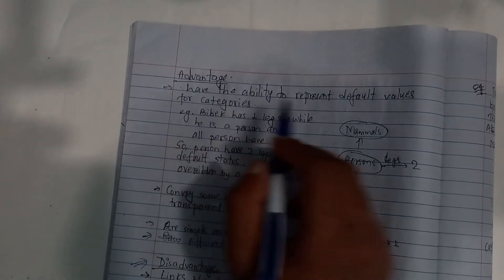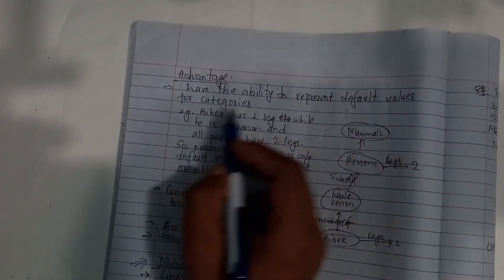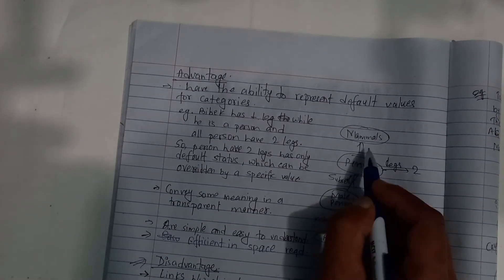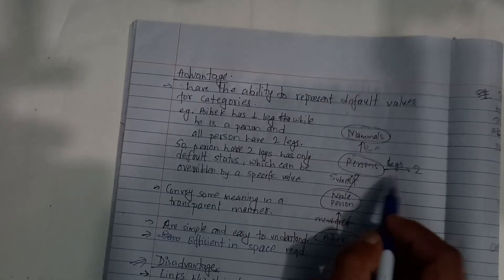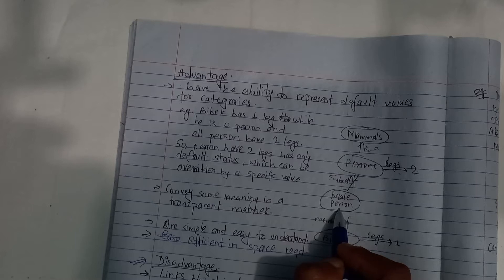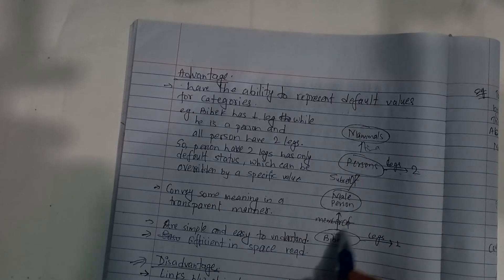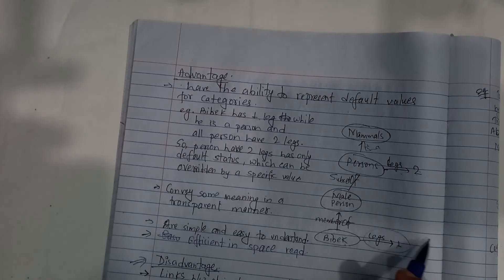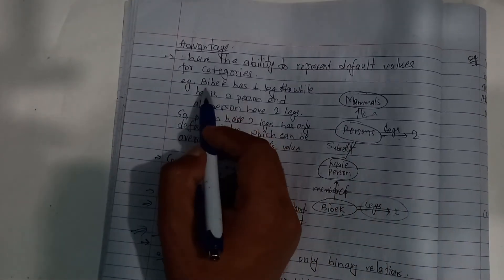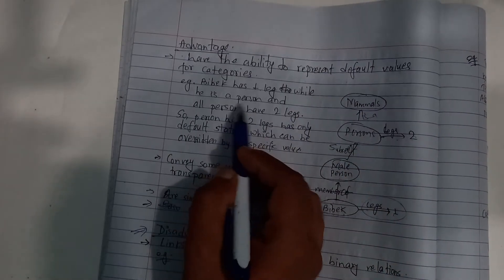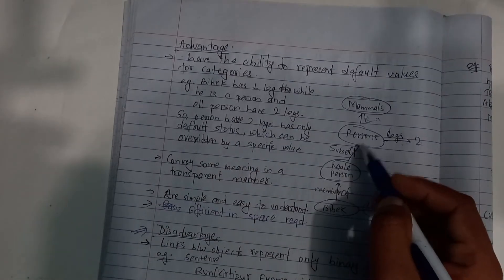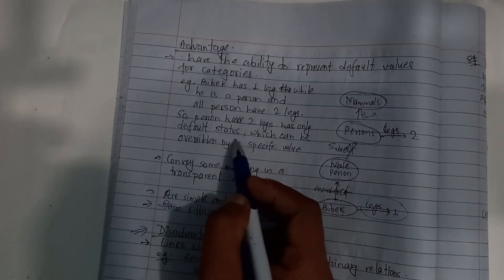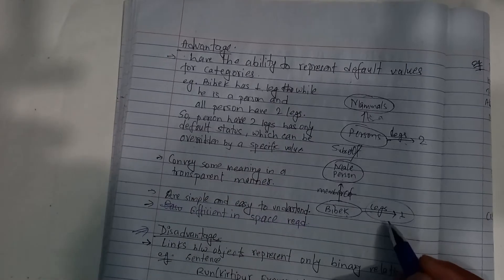Semantic net has the ability to represent default values for categories. For example, mammals are a class, person is a mammal. Bibak is a member of male person. Bibak has one leg while all persons have two legs. The default value of two legs can be overridden by specific values.